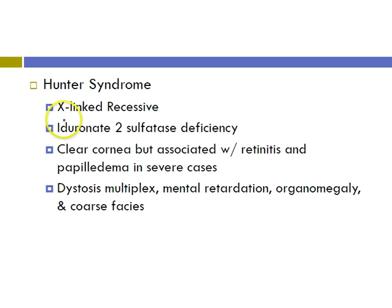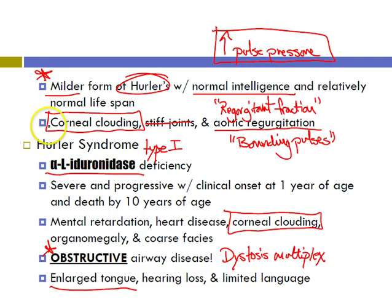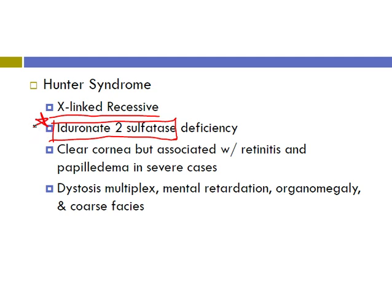Hunter syndrome is X-linked recessive — different from all the others. There is a deficiency of iduronate-2-sulfatase. You also see dysostosis multiplex, mental retardation, organomegaly, and coarse facial features. Hunter's has a clear cornea but is associated with retinitis and papilledema in severe cases. Memory trick: to be a Hunter you need good vision, so clear corneas, and you shoot for the X — X-linked recessive.